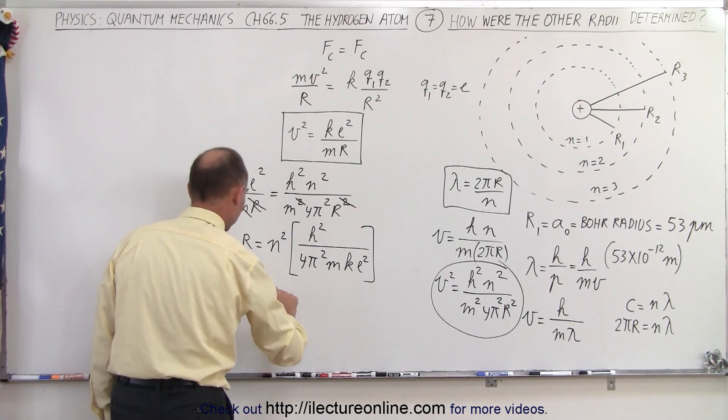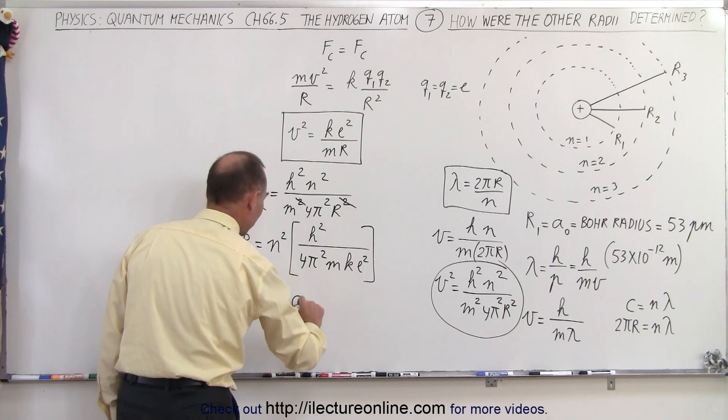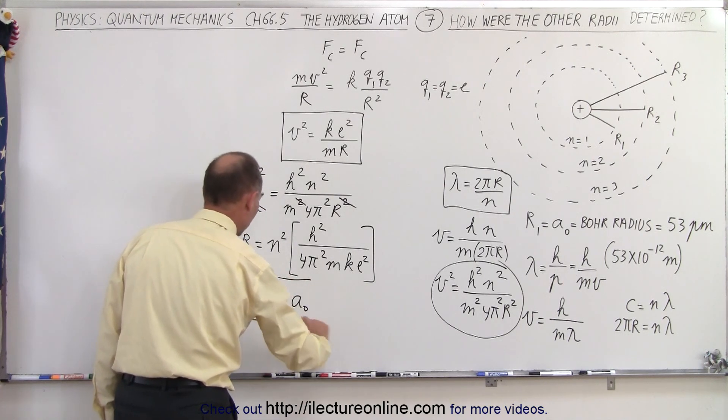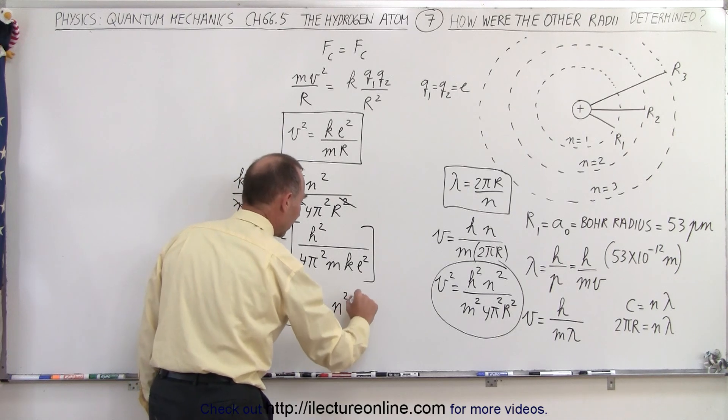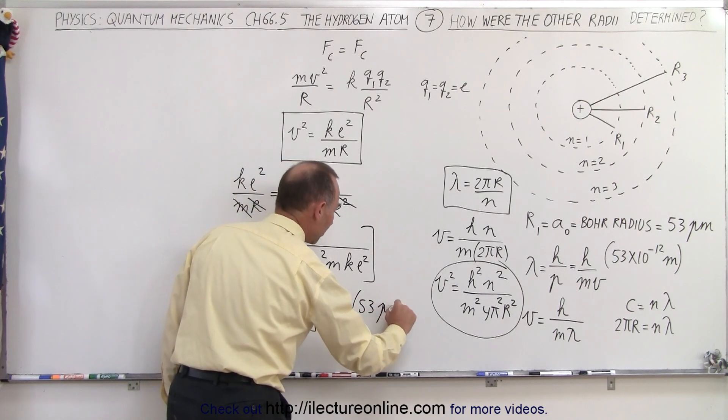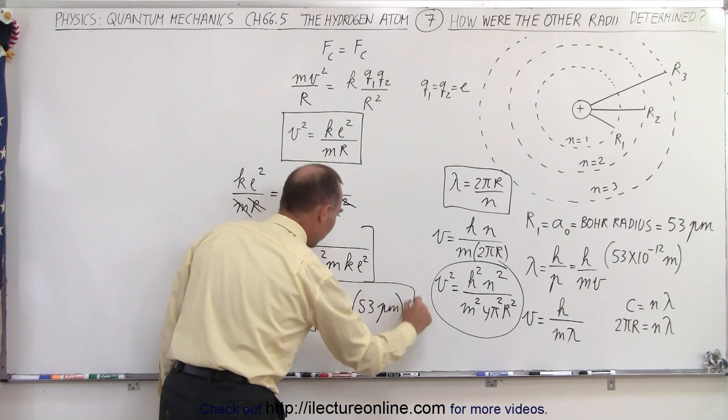So now we can write that r is equal to n squared times a sub nought, a sub nought being representative of the Bohr radius, so this is going to be equal to n squared times 53 picometers, known as the Bohr radius.